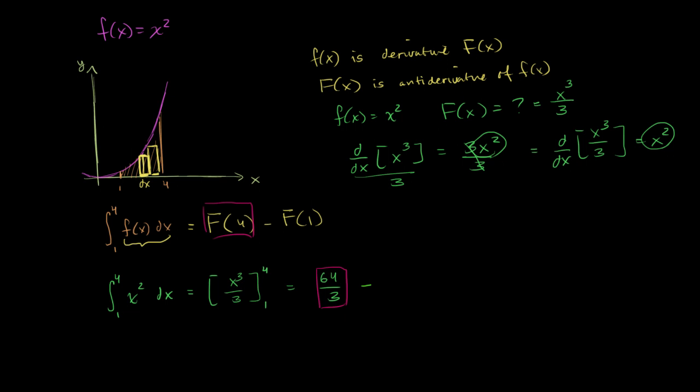And then from that, we're going to subtract this business, evaluate it at 1. Well, when you evaluate it at 1, you get 1 to the third is 1 over 3. You get 1 third. So just to be clear, this is this right over there. And then we are ready to just subtract these fractions. 64 over 3 minus 1 third is equal to 63 over 3. And 3 goes into 63 exactly 21 times.